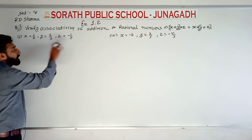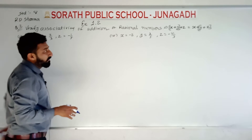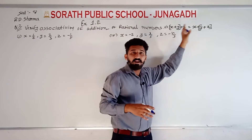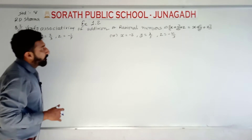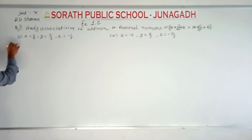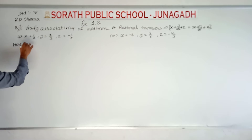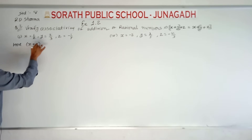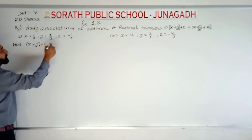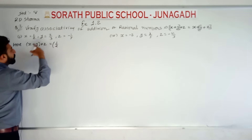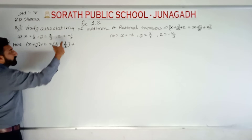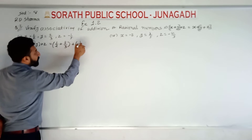Some examples are given with values of x, y, and z. We substitute the values of x, y, z in the left-hand side and right-hand side and check whether it verifies or not. Starting with the first term in the bracket: x plus y plus z. What is x? x is 1/2, plus y which is 2/3, plus minus 1 upon 5.